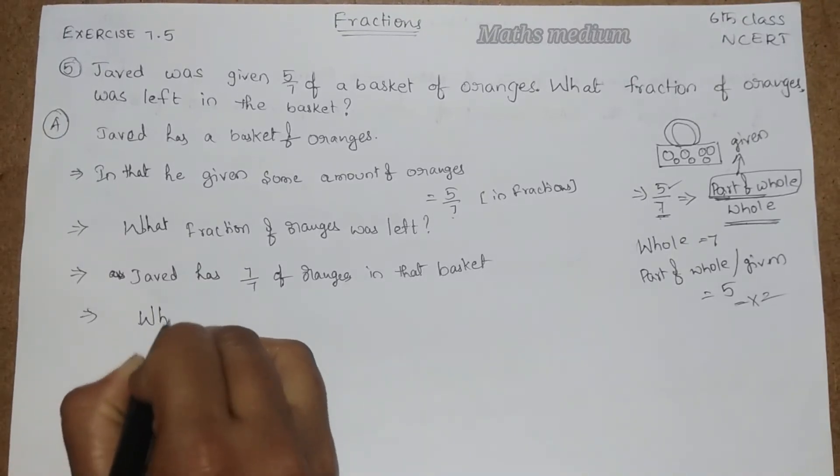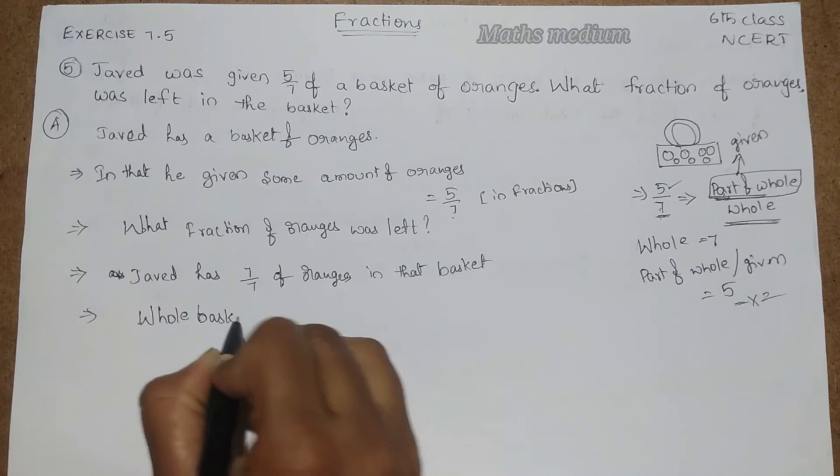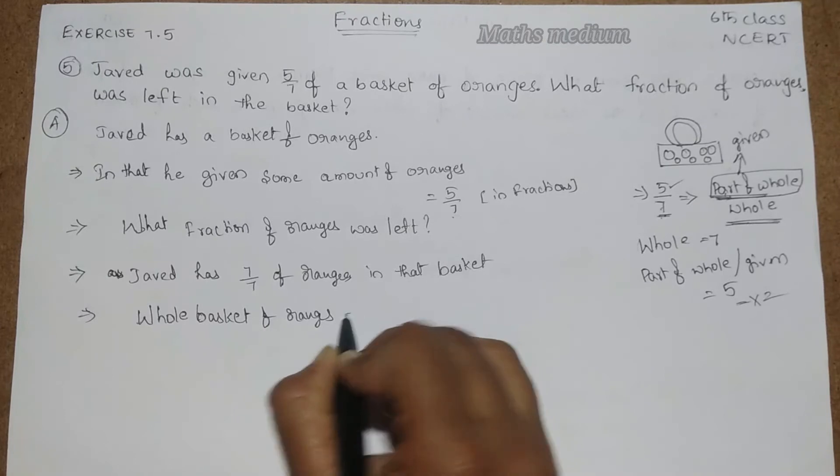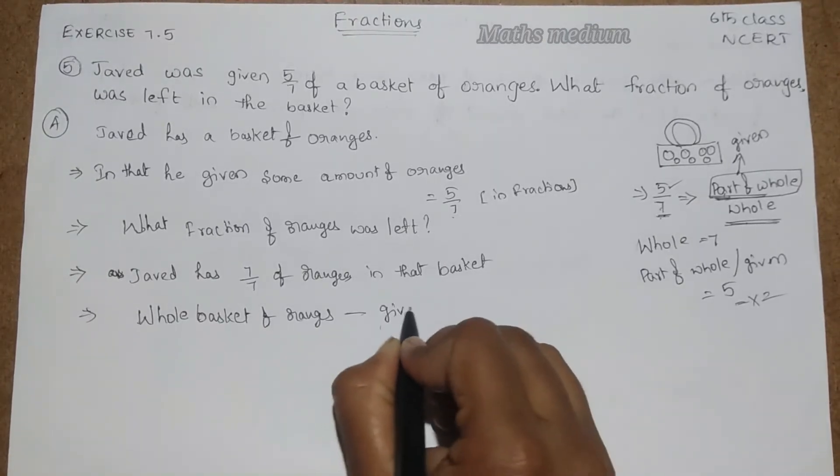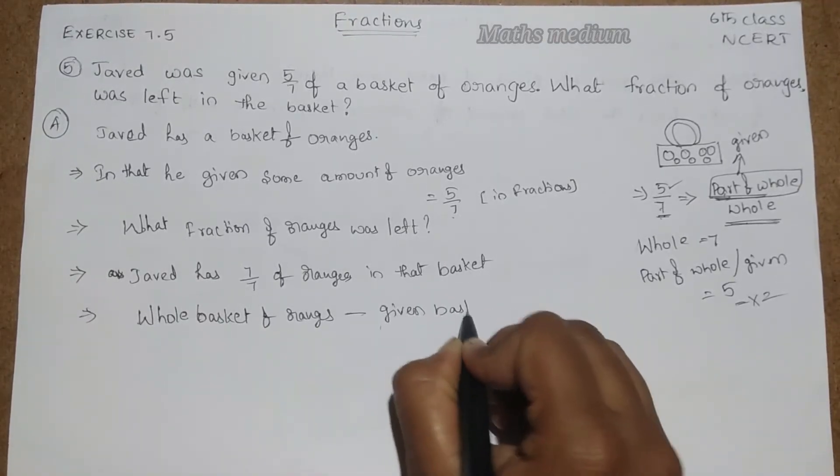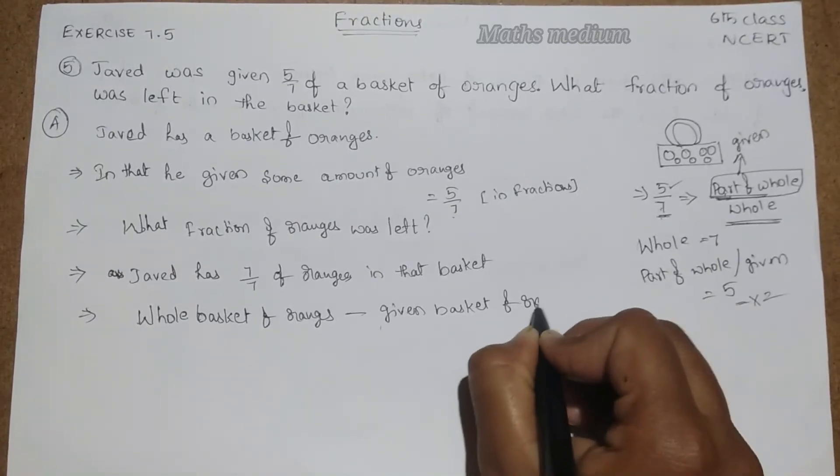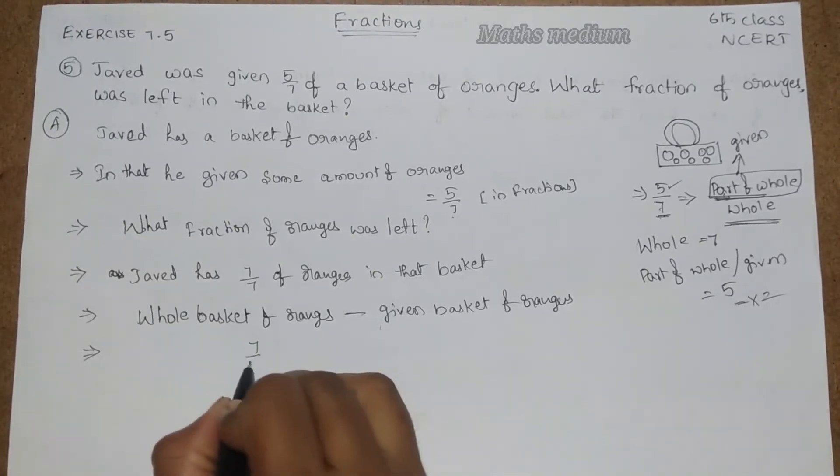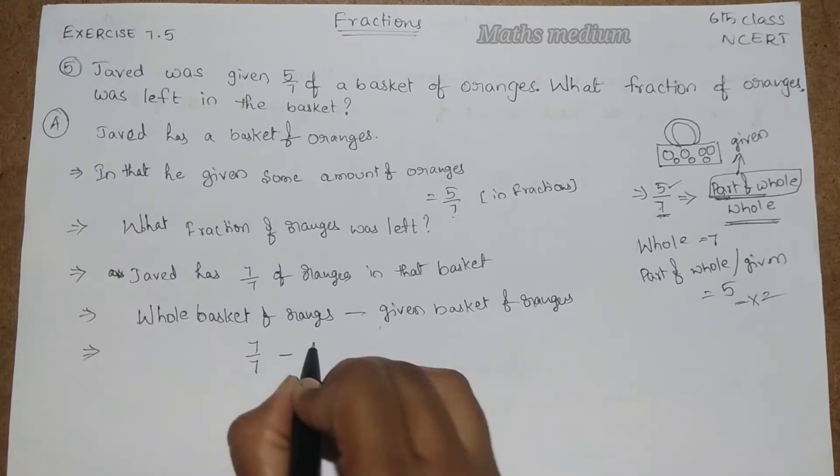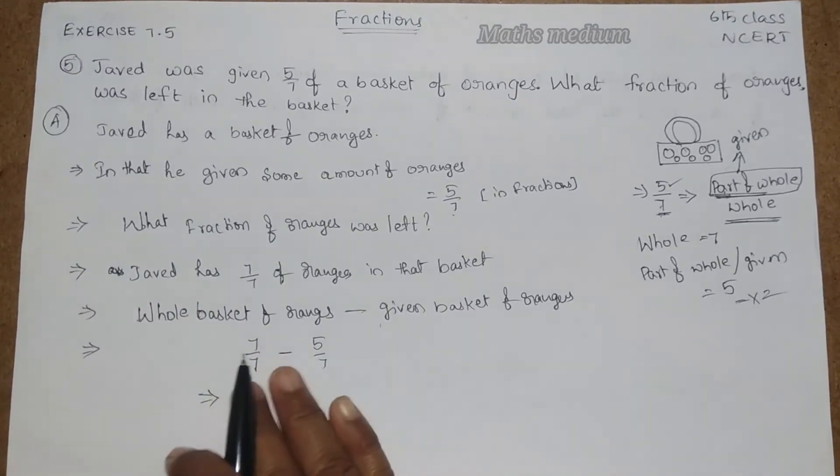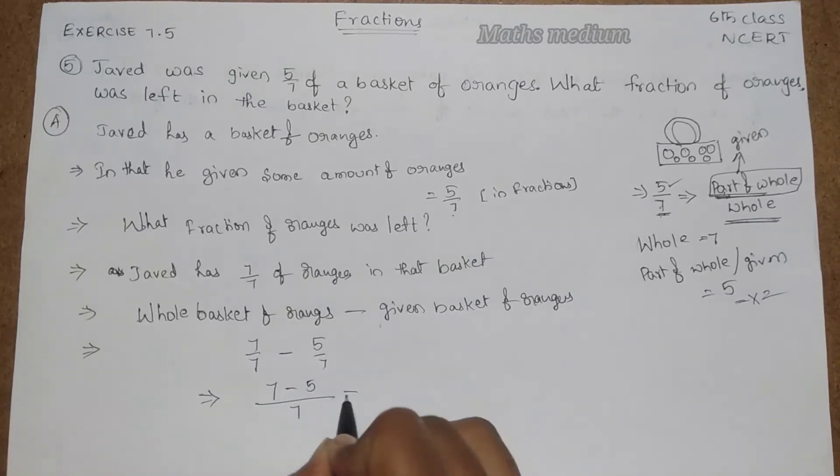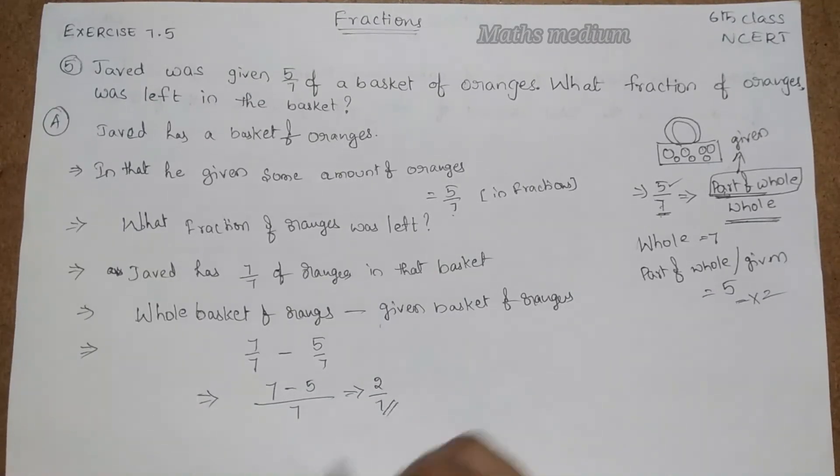So here we are going to write whole basket of oranges minus given basket of oranges. So here whole is nothing but 7 by 7 minus given 5 by 7. See here these two are like fractions, so 7 is the common denominator. Numerator is 7 minus 5, it means 2 by 7.